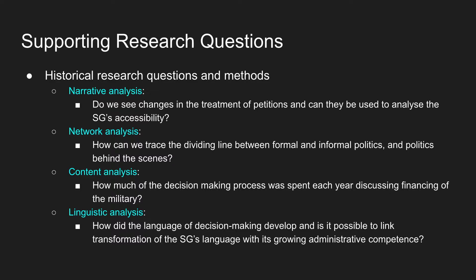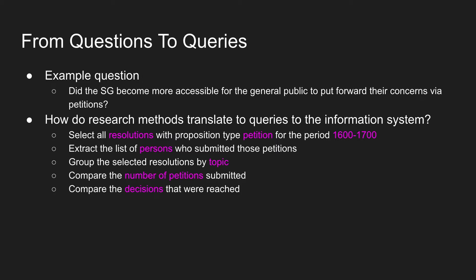To provide access to this corpus, we need to think about what kind of questions researchers have and what they would like to investigate. We look at potential research questions and methods. For instance, narrative analysis: do we see changes in how the States General treated petitions by the general public? Or network analysis, in which a researcher wants to know the dividing line between formal and informal politics — who were involved, who attended meetings, what committees existed, who knew each other, and how did this network of actors operate? Each question requires different ways of handling the structure of the archive.